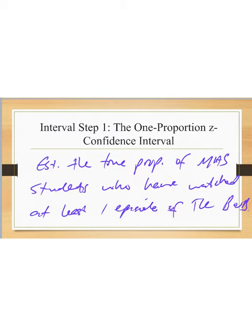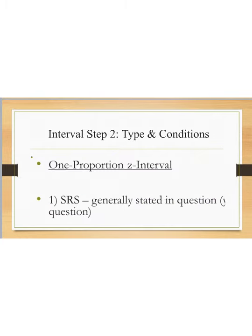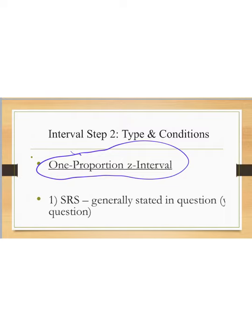After we establish what we want to do, we have to show that our work is valid. We're going to define the process, which here is a one-proportion Z interval — one proportion because it's just one sample, and the Z has to do with the standard error we're using. We have two major conditions. The first is SRS, which is generally stated in the question and you just need to quote the statement from the problem. In this problem, it said 'a random sample of 60,' so you would quote that.